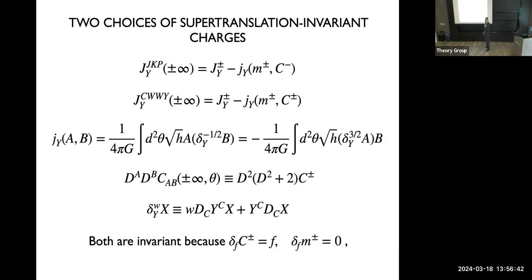Everything is defined in terms of the past boundary graviton. For the definition of Chen, Wang, Wang, and Yao, at the future you subtract the mass aspect at u equals plus infinity times the future boundary graviton, and in the past you subtract the past boundary graviton. So there is a difference between the two. It seems small, but it turns out to be quite significant. The JKP definition is the one that really uses only the independent dynamical variable needed to define the scattering problem — besides C_ab or its time derivative — to define a scattering problem.